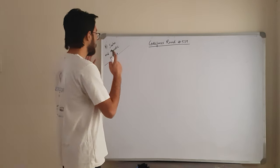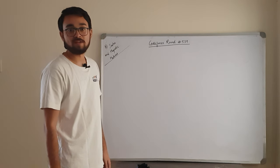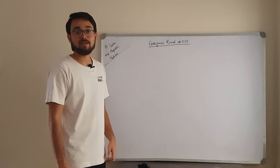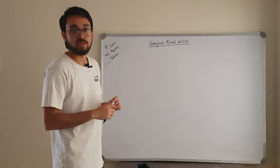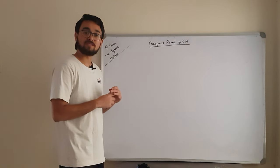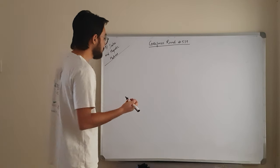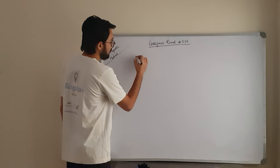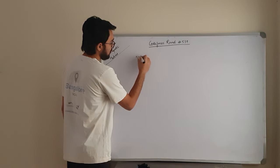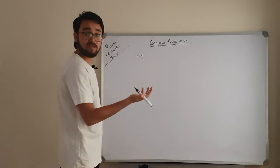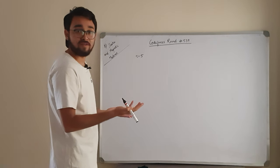Hello everyone. Today we will be solving problem B from Codeforces round 539. For detailed problem statement, follow the link in the description. So what the problem wants to say is we are given an array. If n is 5, that means we are given an array of size 5.